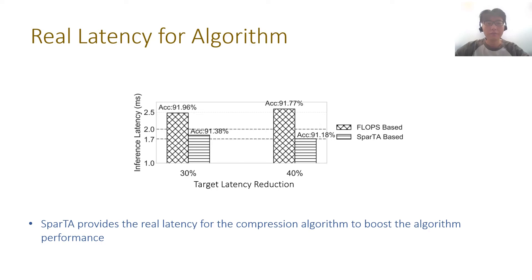Finally, we show how SPARTA boosts algorithm performance by providing real latency as feedback to the pruning algorithm. The figure shows models searched by the algorithm based on FLOPs and latency respectively. The best SPARTA models found by the two methods have similar accuracy. However, the model found via FLOPs does not meet the latency requirements — the models found based on FLOPs are 24% and 51% higher than the latency requirements, respectively.